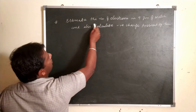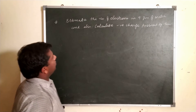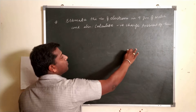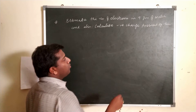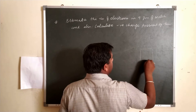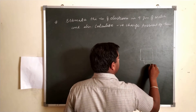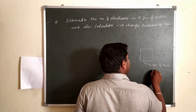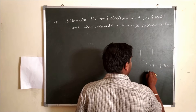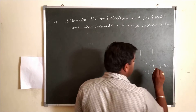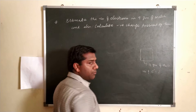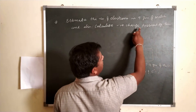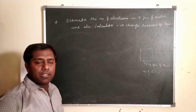Next numerical: Estimate the number of electrons in 9 grams of water and also calculate the negative charge possessed by them. We are told there is 9 grams of water. We need to find the number of electrons and the negative charge. According to quantization of charge, once we find the number of electrons n, we can easily find the charge.